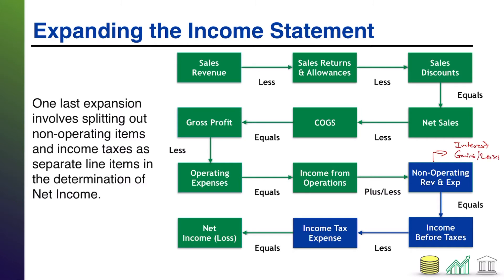Gains and losses also go here. Gains and losses are essentially revenues and expenses, but they're not generated from your core business — they're generated from something else you did. For example, Apple is in the business of selling iPhones. Any money it makes from selling an iPhone is a revenue. Apple is not in the business of selling off old equipment it no longer needs. So in the event that it sells a piece of old equipment and profits from that sale, they would record that as a gain, not a revenue, and it would go in this non-operating section. And if you lose money on a similar transaction, that's a loss.